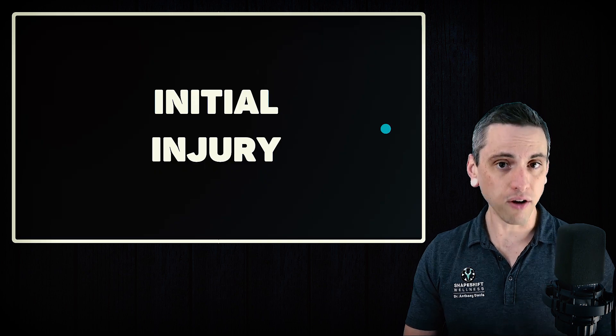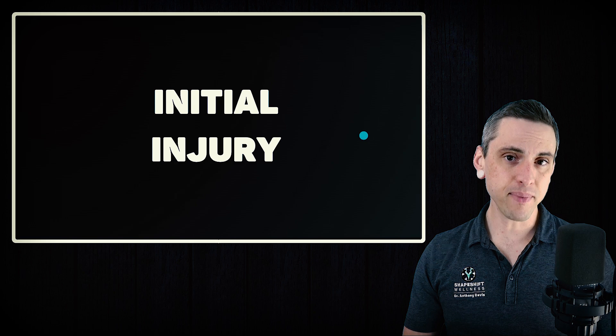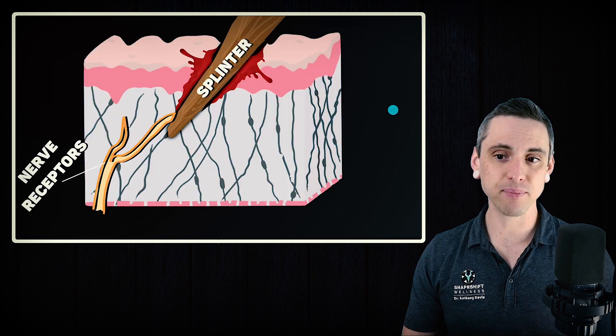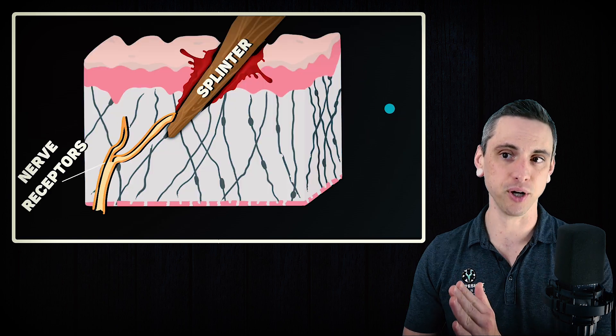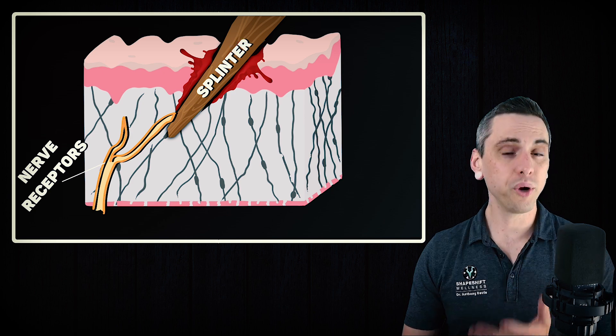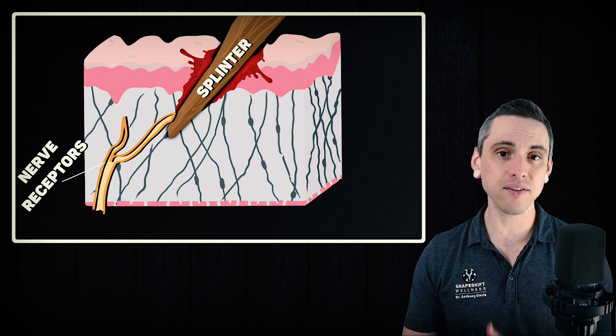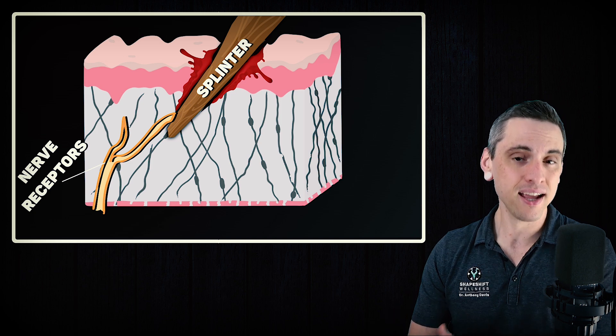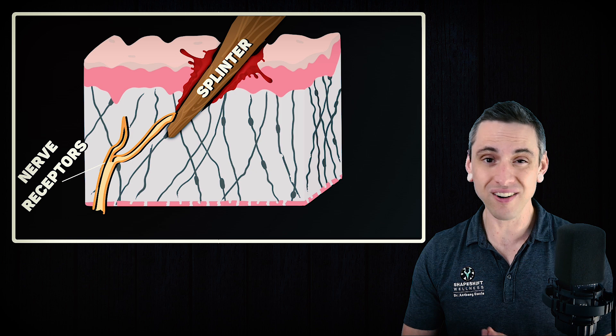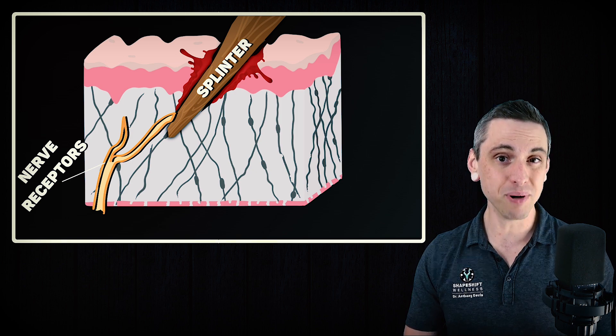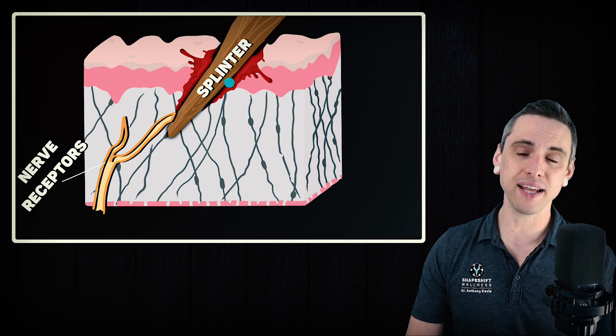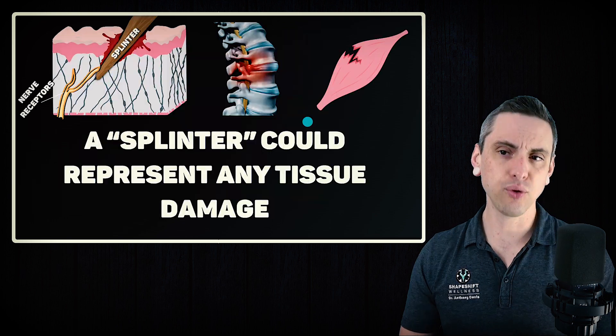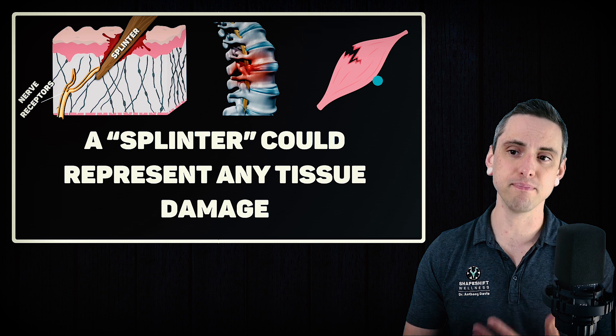So peripheral sensitization can often start with an initial injury. For many of you, that's lifting something heavy, perhaps having a disc herniation, pulling a muscle or something of that nature. But for this example, I'm going to use something that is very textbook, and that is a splinter entering the tissue, which is a great metaphor for a lot of types of low back pain because a splinter is a very minor injury, but it causes an inordinate amount of pain. In the same way, many causes of low back pain and sciatica are not nearly as serious as most people think they are, but they can cause a crazy amount of pain. A splinter could represent any type of tissue, disc herniation, muscle tear, you name it.